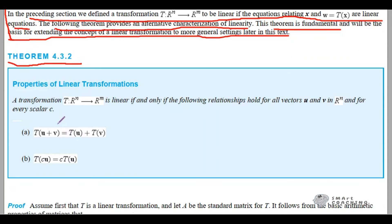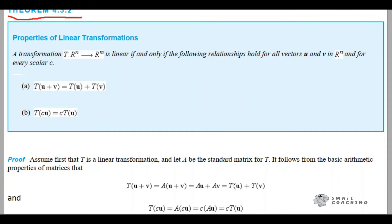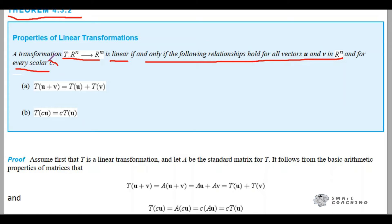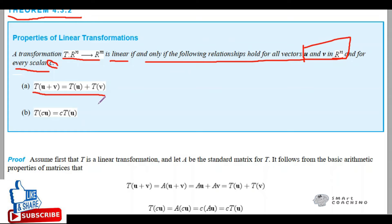In other words, we are moving from the equation-based definition to another definition for linearity. This new definition will be the more widely used definition for linearity. So now let's consider this theorem: we have a transformation T from R^n to R^m. This transformation will be linear if and only if the following relationships hold for all vectors u and v in R^n and for every scalar c - where c is just a number and u and v are vectors in R^n.